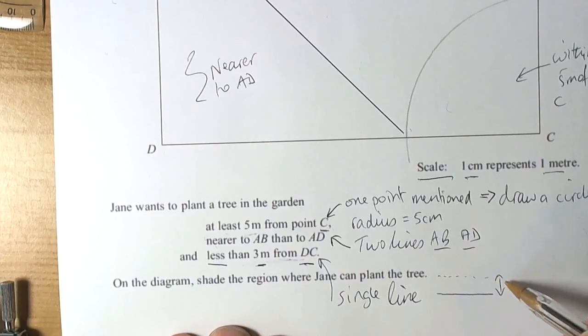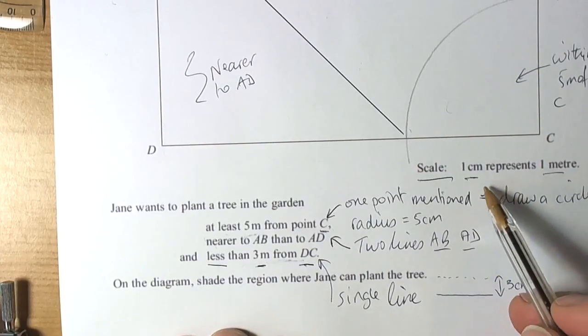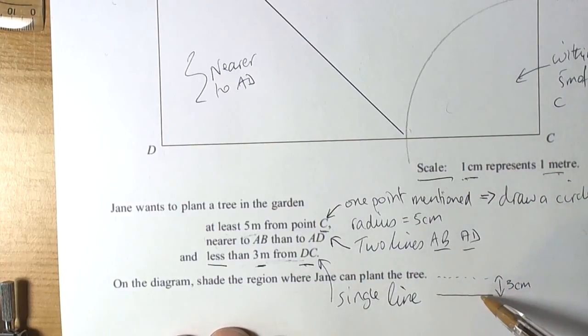That's got to be three centimetres because of the scale. One centimetre represents a metre. Three metres. So we want to draw a parallel line to this line here.